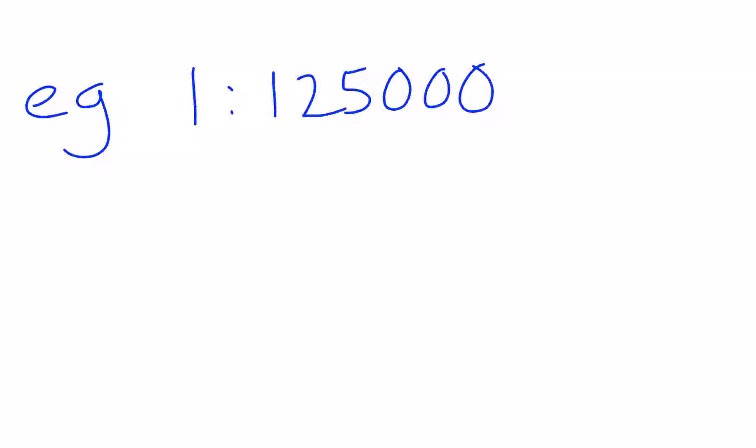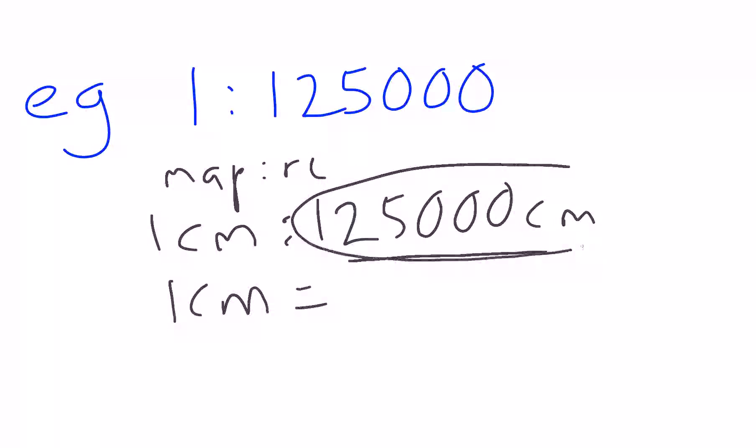We can convert from map scale back to a simple conversion scale, which is often easier to deal with. Here we've got a ratio. We remember it's still map to real life. Put units in. Pick centimeters. One centimeter gives us 125,000 centimeters in real life. Now that's a nice easy conversion in some ways, but no one gives a distance as 125,000 centimeters. So let's leave this as one centimeter and convert this number here to something a bit more useful in real life like kilometers.